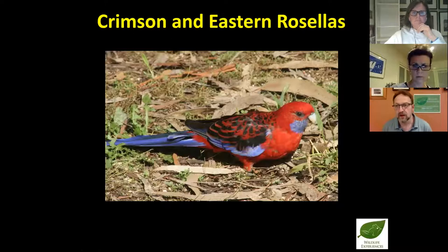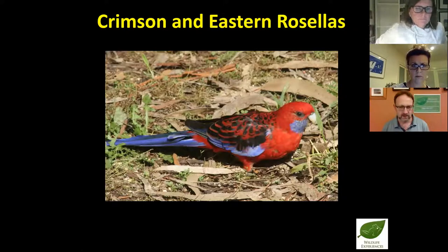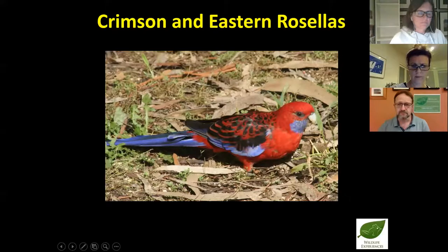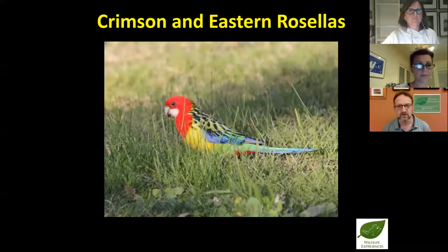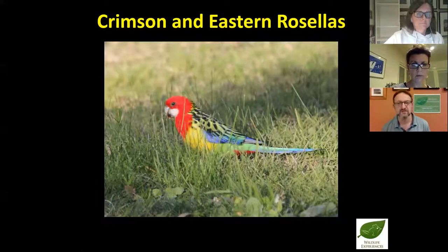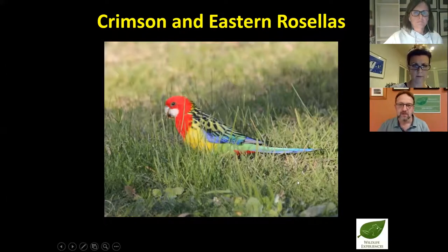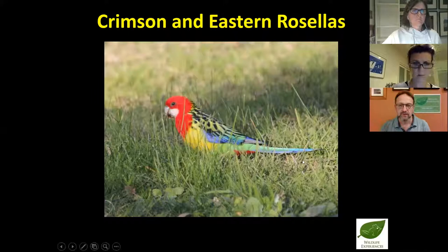The next group of birds is the parrots. Crimson and eastern rosellas are a common feature in many backyards in the outer suburbs. This is the crimson rosella — hence the name — and this is the eastern rosella, which I often refer to when talking to kids as the sauce bottle rosella, because it is the bird that is the icon of Rosella sauce. They are medium-sized parrots that will quite happily nest in boxes and in hollows.